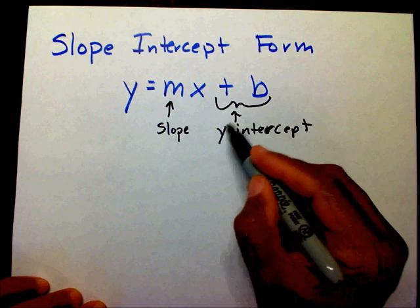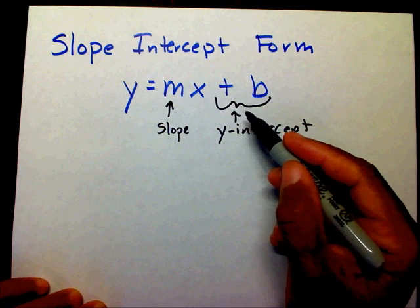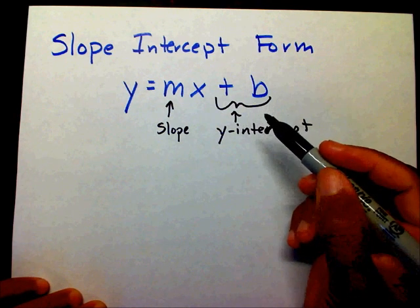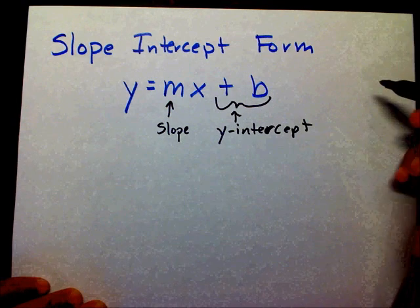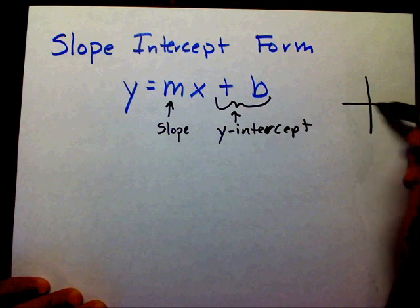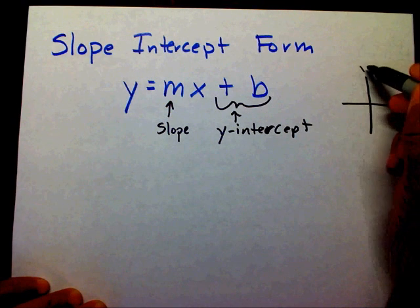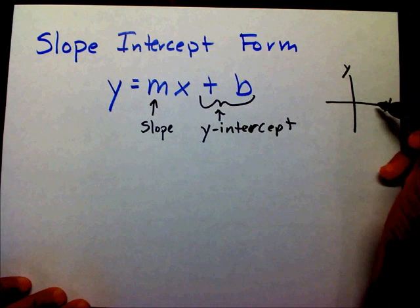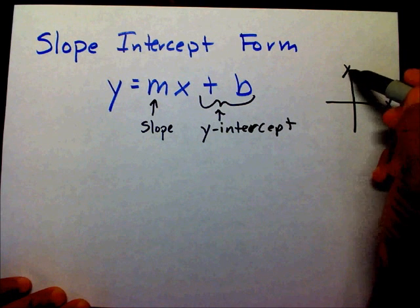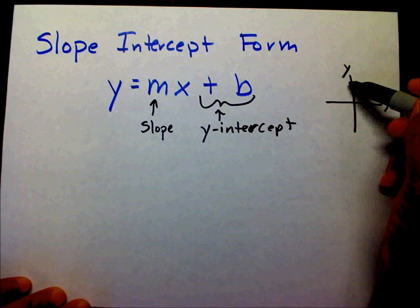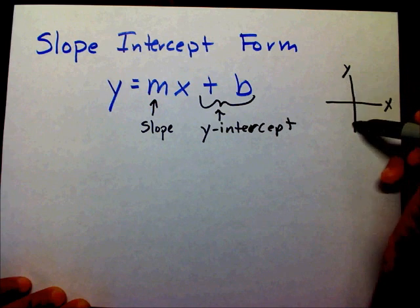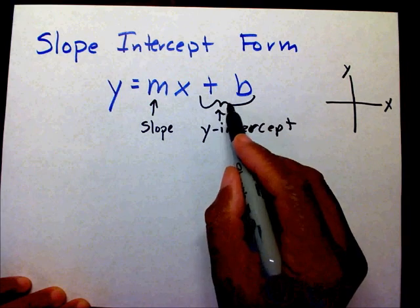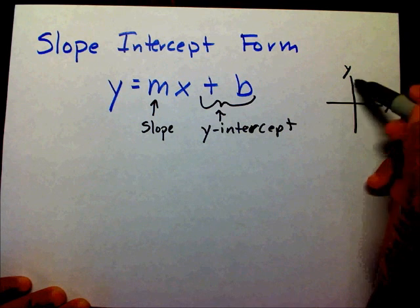The plus b is your y-intercept. The y-intercept is where your line is going to cross your y-axis. This is your y-axis and this is your x-axis — the point where your line is going to cross this line.